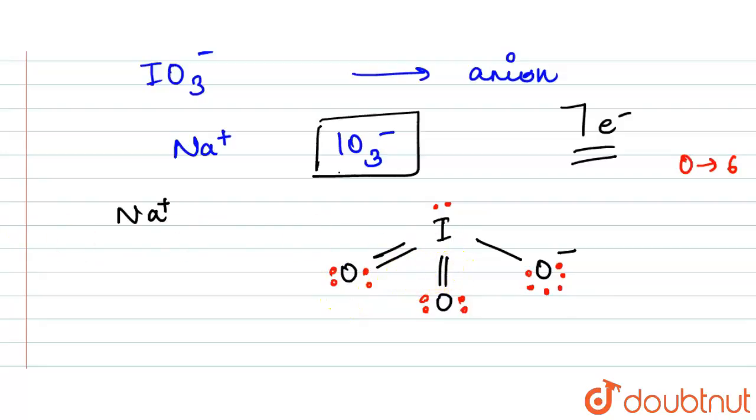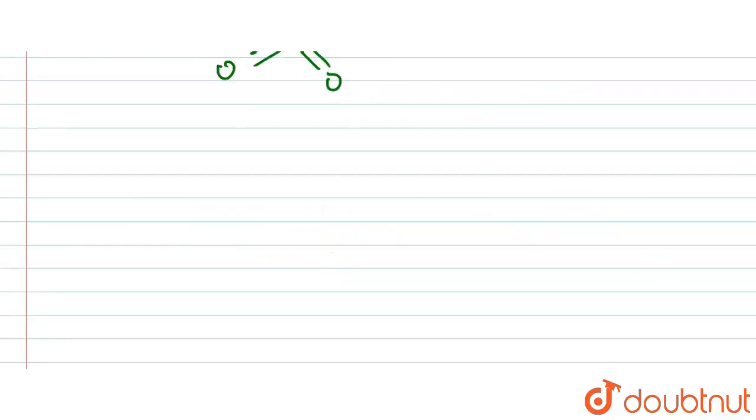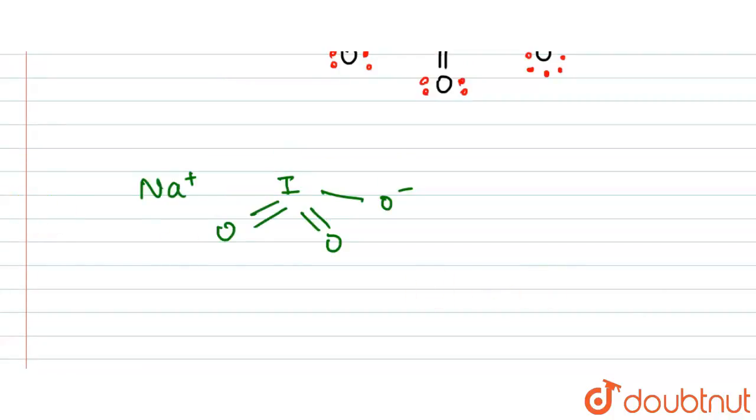And it can also be represented like this - here we have Na plus, here we have I double bond O, here we have O minus. So this is NaIO3, or we can give this representation for the structure of the NaIO3 like this - here we have I, here we have double bond O, here we have double bond O, here we have O minus and we can show their bond like this.